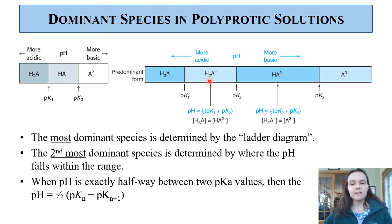When the pH is exactly halfway in between two pKa values, then the pH is equal to one half of the sum of those two pKa values. So right here, halfway between pK1 and pK2, the pH is one half of pK1 plus pK2. Also, the two neighboring species, H3A and HA2-, have equal concentrations there. You can think of this as being right in the middle of the tug of war.